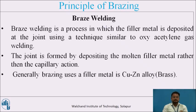Braze welding is a process in which the filler metal is deposited at the joint using a technique similar to oxyacetylene gas welding, making it similar to any fusion welding operation. The joint is formed by depositing molten filler metal rather than by capillary action, so it requires more filler metal than brazing. A strong joint can be formed since the joint is thicker; however, the melting temperatures are lower in braze welding than in fusion welding. Generally, braze welding uses a CuZn alloy, that is, brass, as filler metal.